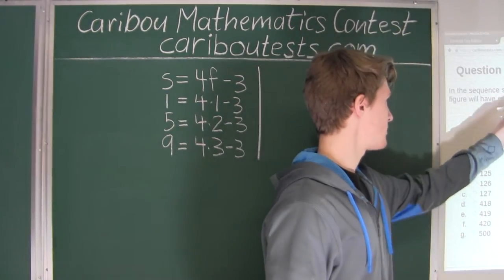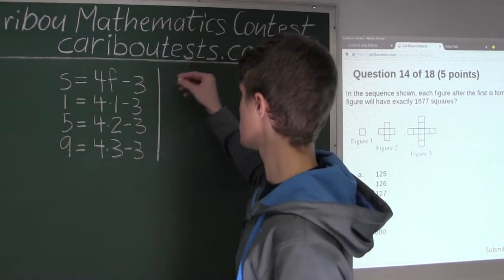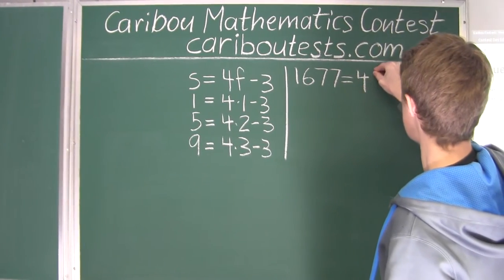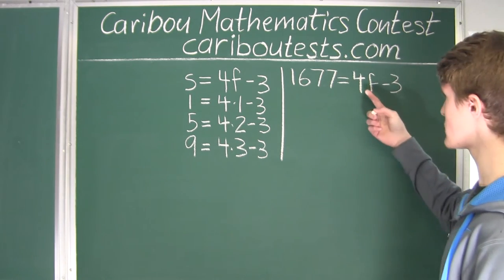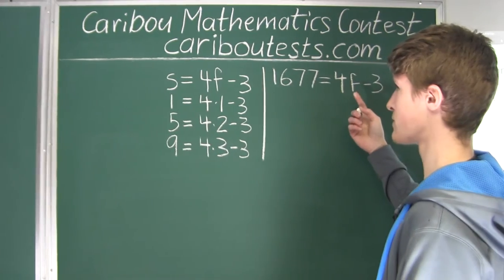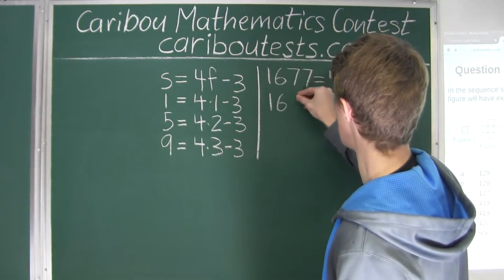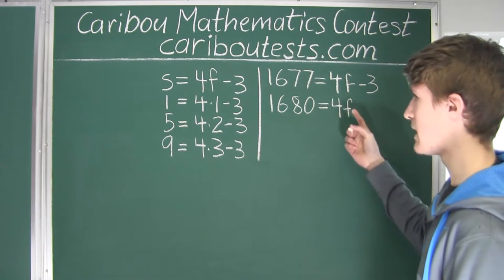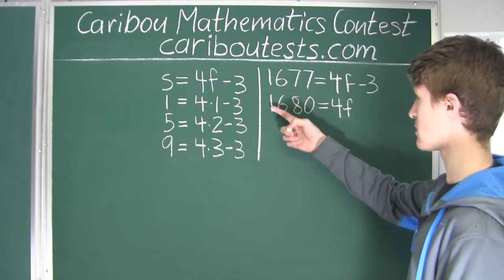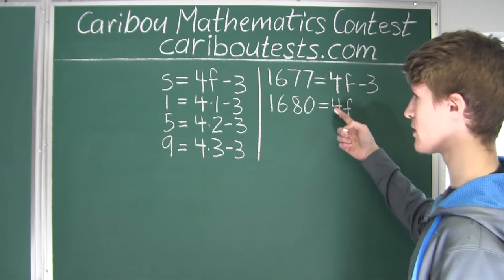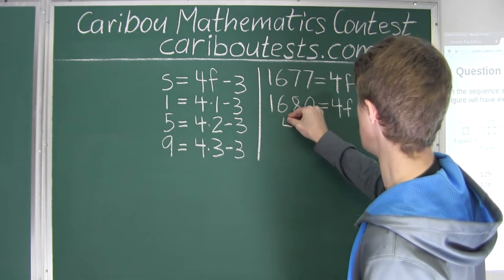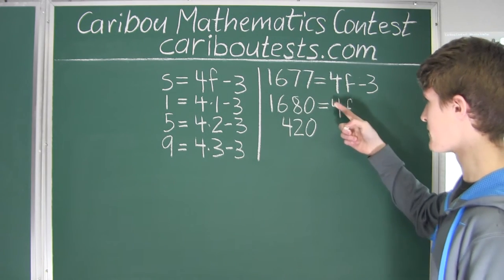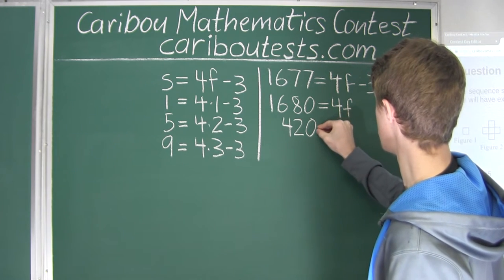Now let's substitute S = 1,677 into the formula. We have 1,677 = 4F - 3. To isolate 4F, we add 3 to both sides, giving us 1,680 = 4F. Dividing both sides by 4: 1,680 divided by 4 is 420. So F = 420.